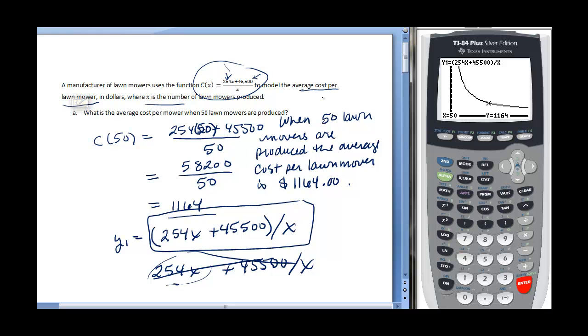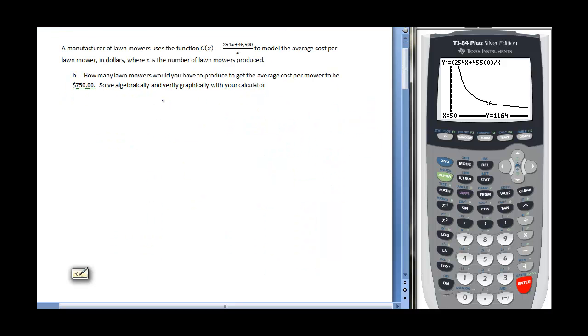Let's look at letter B. Letter B says how many lawn mowers would you have to produce to get the average cost to be $750. Solve algebraically and verify on your calculator. Here I need to recognize that the 750, my average cost per mower, is my output. So I would put 750 as my output and set that equal to my equation. Then I would need to solve for X.